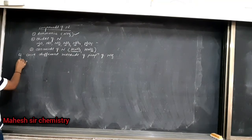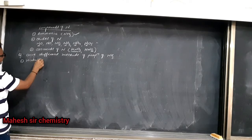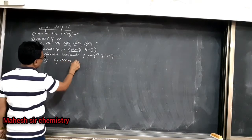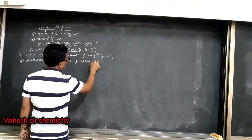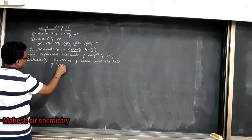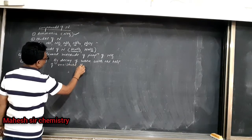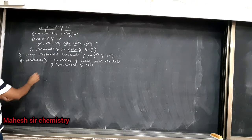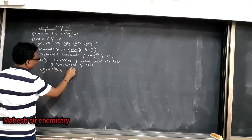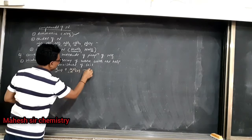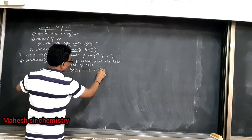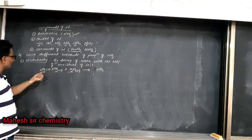First, naturally ammonia is prepared by the decay of urea with the help of moisture in the soil. The formula of urea is NH₂CONH₂. When urea reacts with moisture already present in the soil, since there are 2 nitrogen atoms, it gives 2 moles of ammonia.